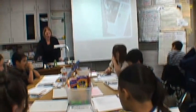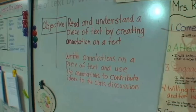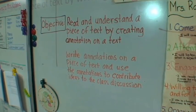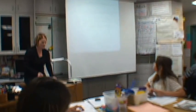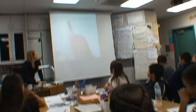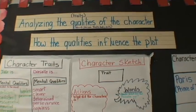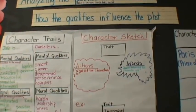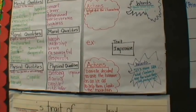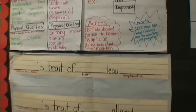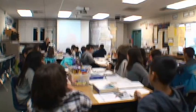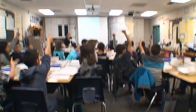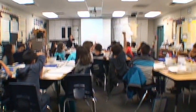Let's go back and make sure we've really looked at the things we were going to focus on. Give me a thumbs up or thumbs down if we've done the things. Did we read and understand a piece of text by writing annotations? I'm seeing mostly yes. Did we focus our attention on the qualities of a character? Did you annotate the text for evidence?